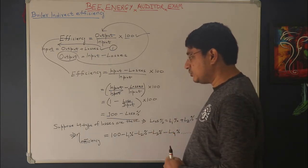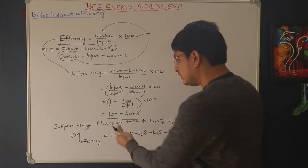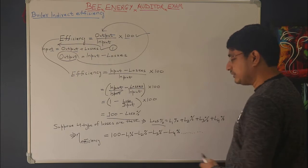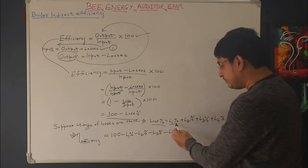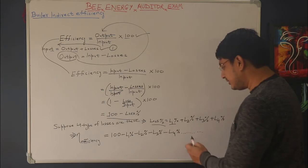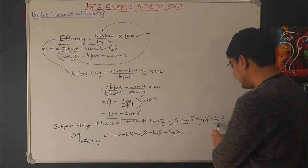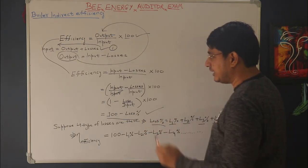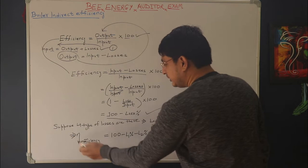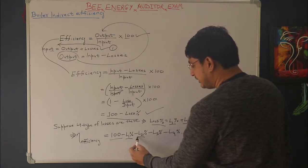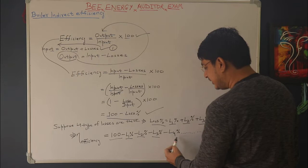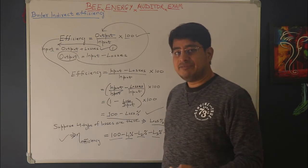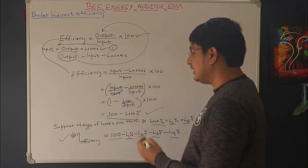Suppose there are four types of losses in my system. The total loss percent = L1% + L2% + L3% + L4%. So the efficiency formula becomes: 100 − L1% − L2% − L3% − L4%. This is the concept I will use for calculating boiler efficiency using the indirect method.